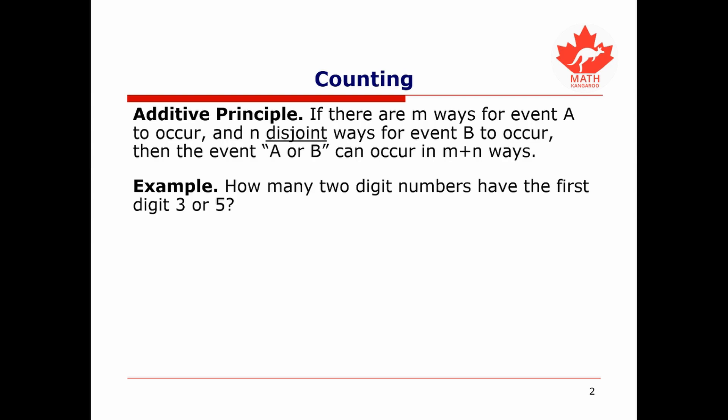This principle is most easily understood through examples, so let's do a quick example to get a feel for it. If I ask how many two-digit numbers have the first digit 3 or 5, we might break this into separate events and consider how many times does A or B occur.